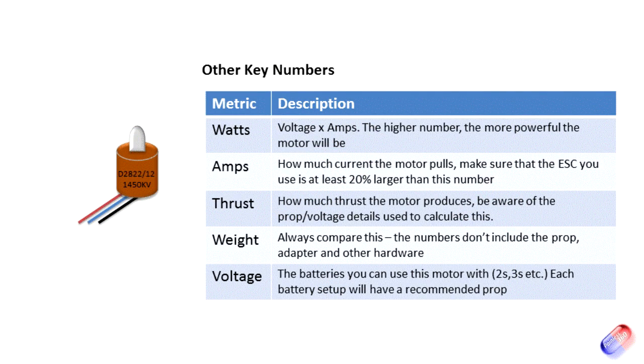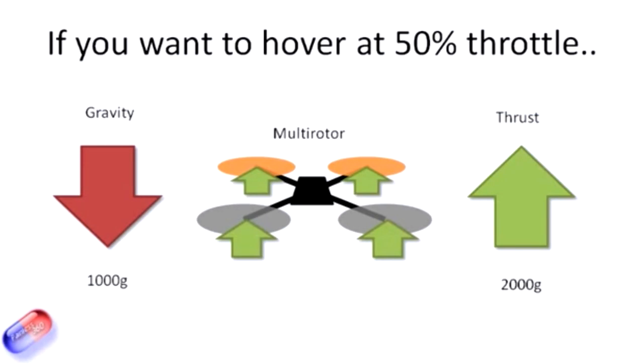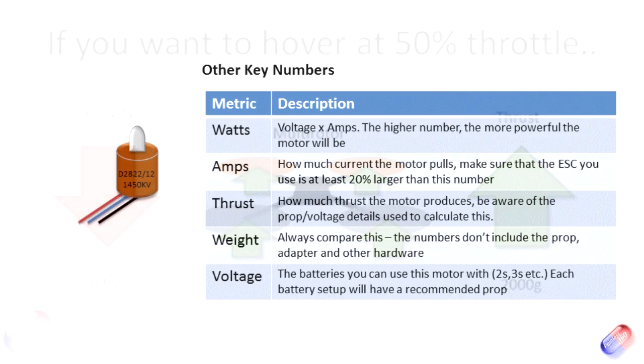Similarly with a quadcopter, if you have a kilograms worth of model and you want four motors, the motors in total should produce over twice as much thrust as there is weight. Just look at how to select a motor for quadcopter videos for more detail.